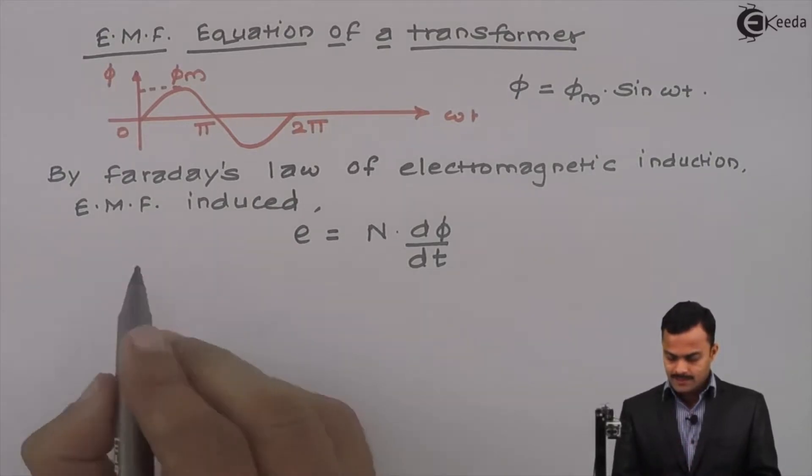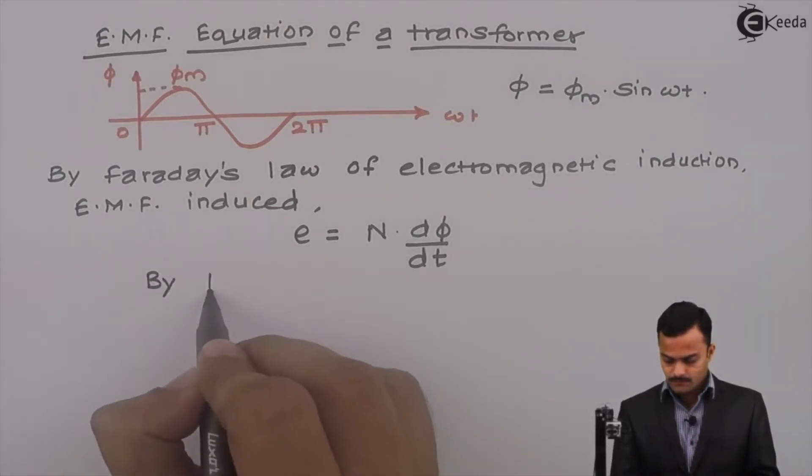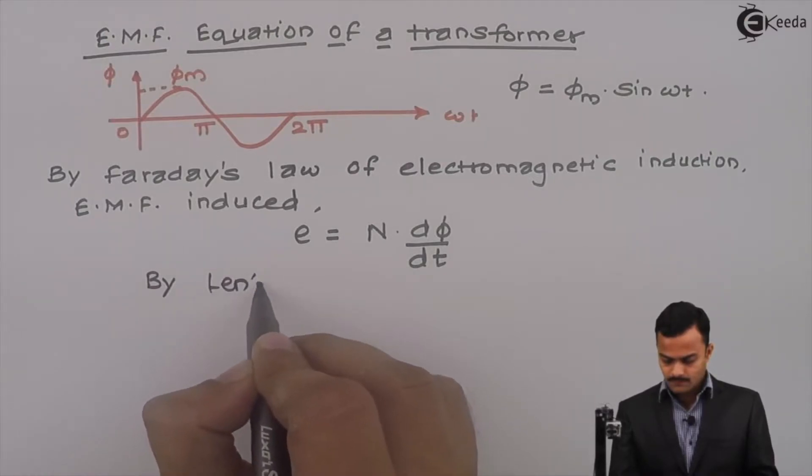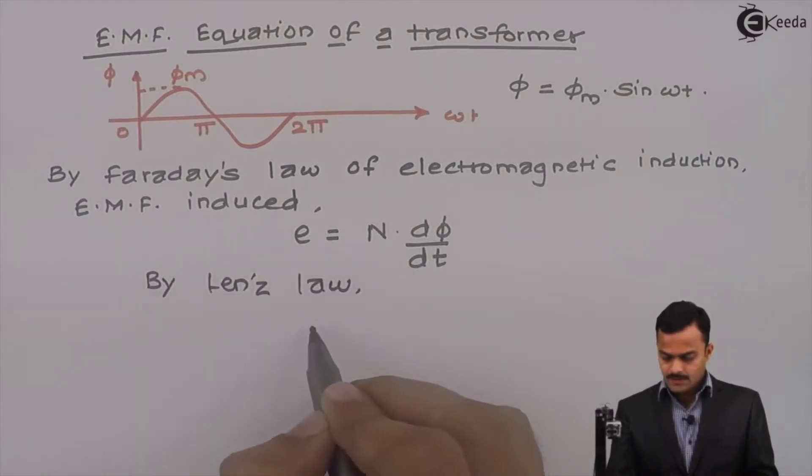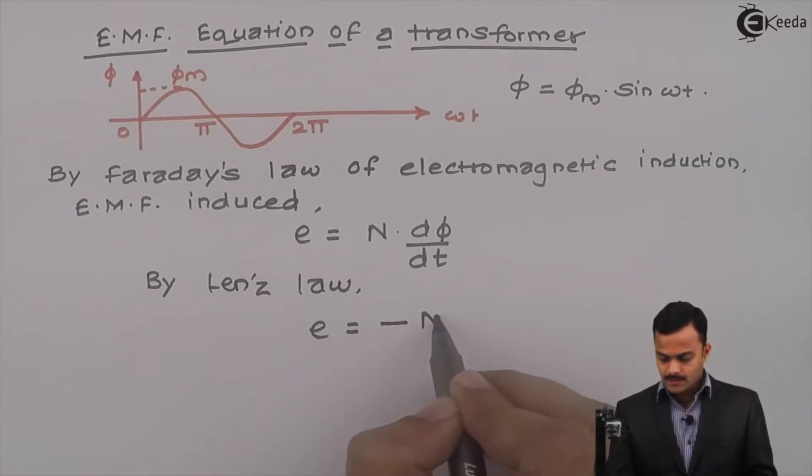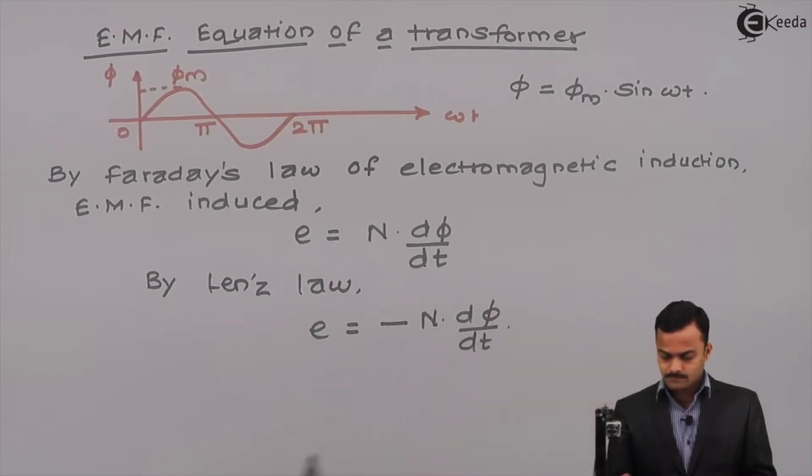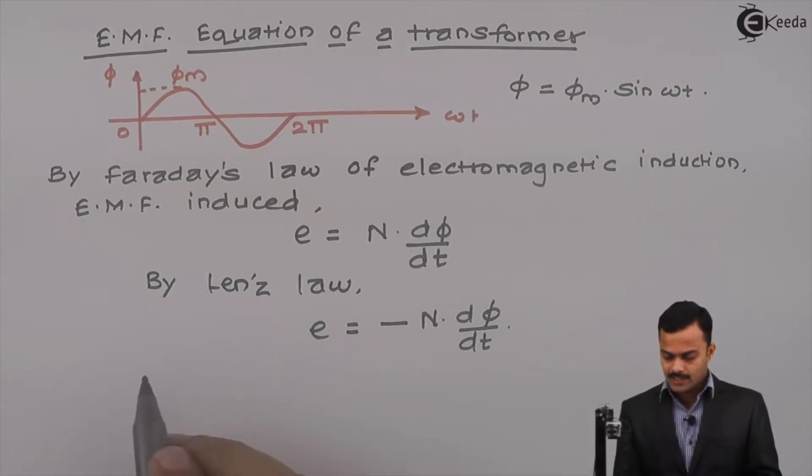So by Lenz's law, this EMF should be minus n d phi by dt. This is a generalized expression. We are talking in terms of primary number of turns, secondary number of turns with respect to transformer.